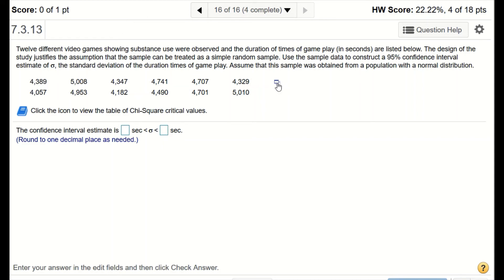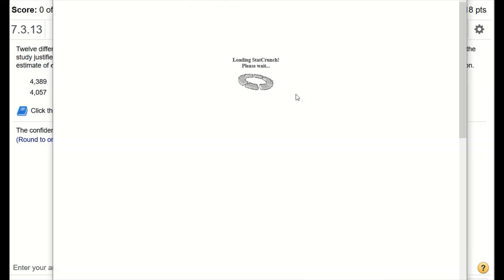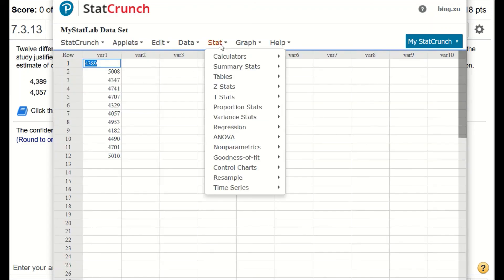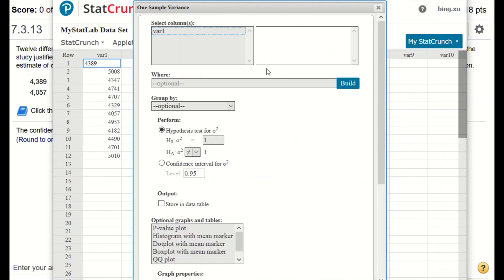All right, so I'm going to use StatCrunch to solve this problem. So open the data in StatCrunch. Okay, so I will go Stat, Variant Stat. Here is with data, one sample with data.